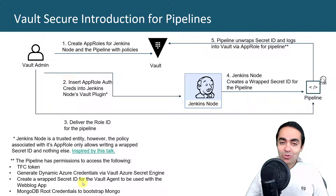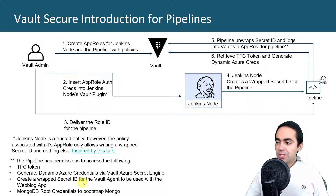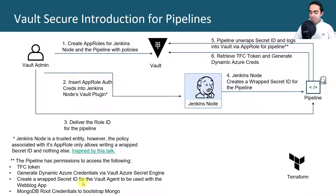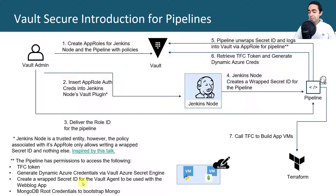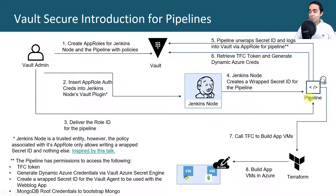In step six, the pipeline retrieves the TFC token and generates dynamic Azure credentials. Jenkins then calls on Terraform to build the application VMs — Terraform goes to Azure and builds the VMs using credentials taken from Vault. Looking back at the overall flow, it might seem complicated but step by step it's straightforward. It really delivers the credentials into the pipeline very securely.